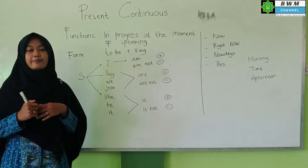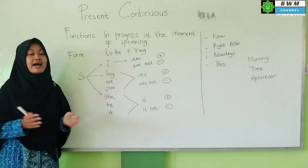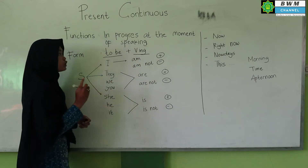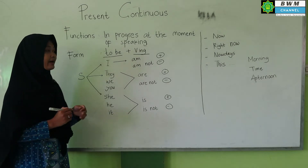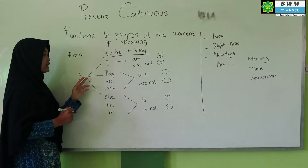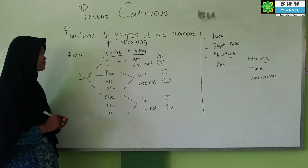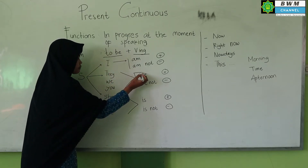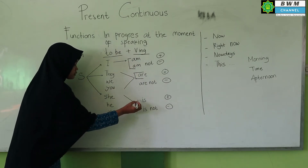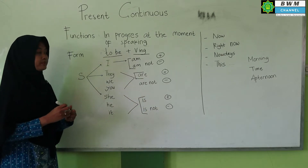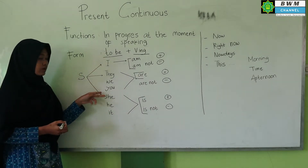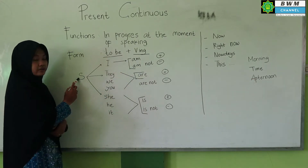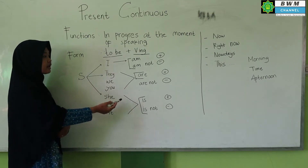Next, I'm going to explain the form. The form or rumus uses 'to be plus V-ing.' To be is placed after the subject to accompany the V-ing. The to be forms are: Am, Is, and Are. For subject I, the to be is 'am.' For subjects They, We, and You, the to be is 'are.' For subjects She, He, and It, the to be is 'is.'